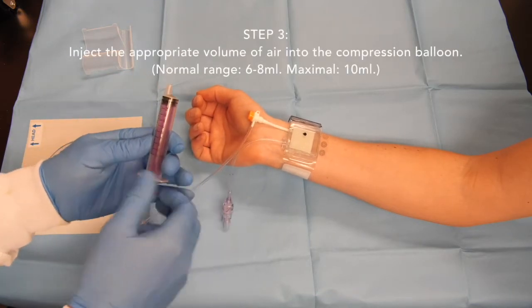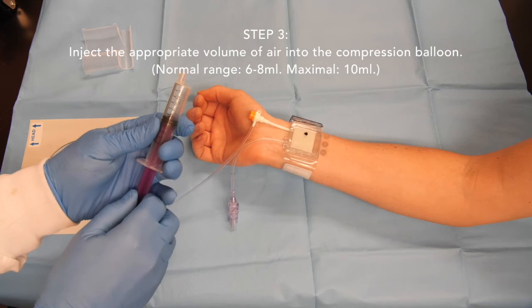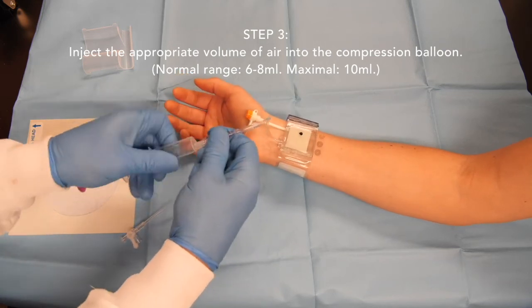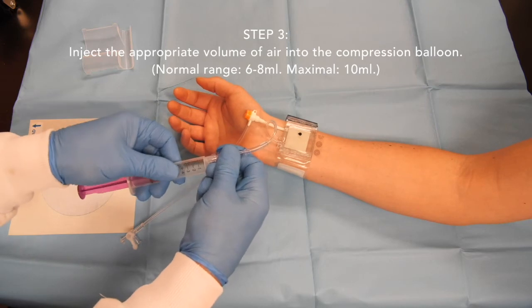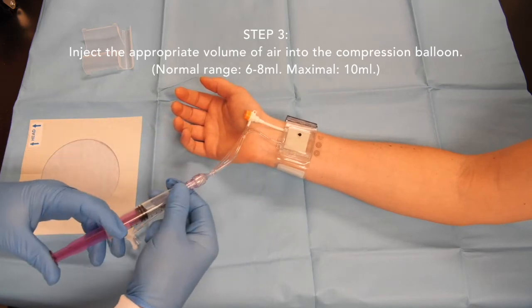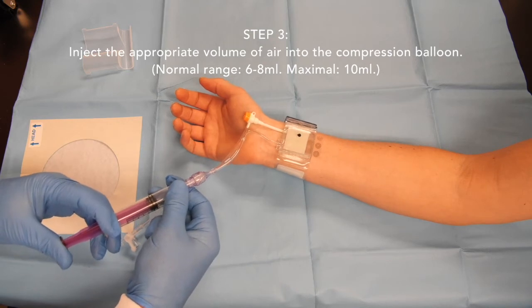Charge the syringe with an appropriate volume of air, typically close to 7 ml. Connect the socket end of the syringe to the plug end of the air valve with a gentle 180-degree clockwise rotation of the syringe.